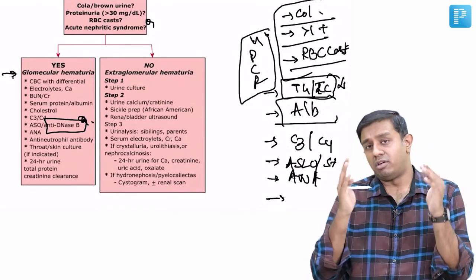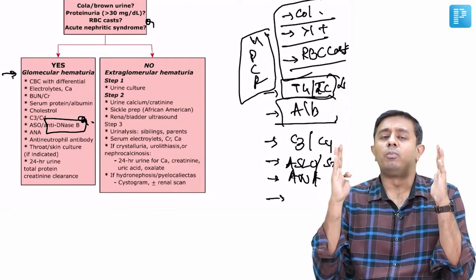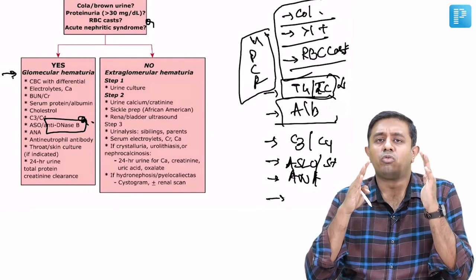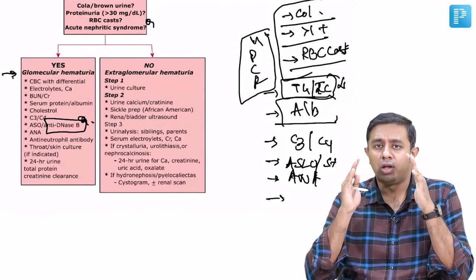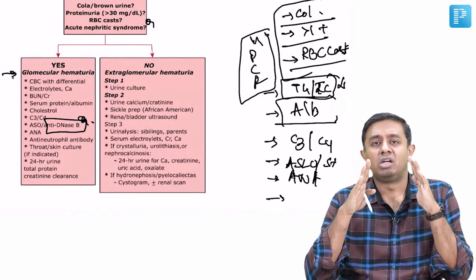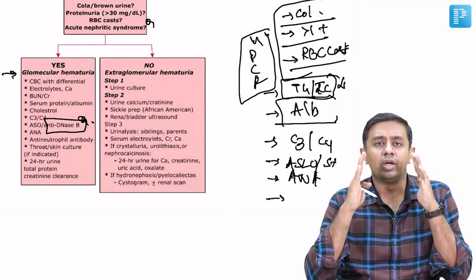Again, glomerular causes we are trying to differentiate whether it is a nephrotic picture or nephritic picture. If you have a dominant nephrotic picture, like to go for the lipid profile, albumin, and protein creatinine ratio for quantification of proteinuria.